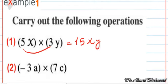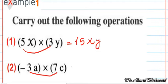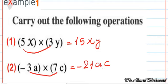The next one: negative 3a times 7c. Negative 3 times 7 equals negative 21. A and c are unlike symbols, so we write a and c without change to get negative 21ac, or negative 21 times a times c.